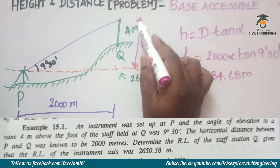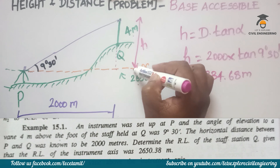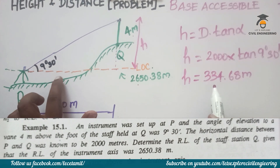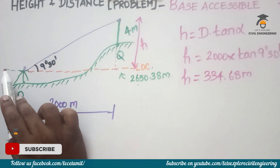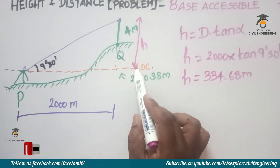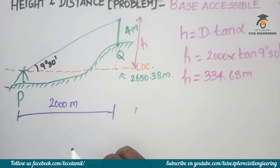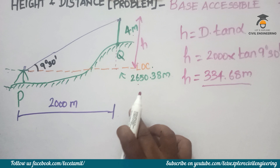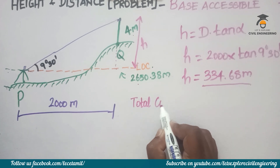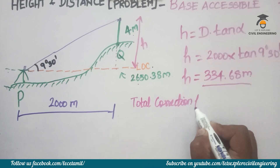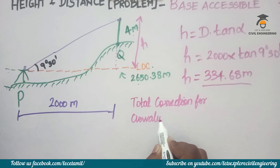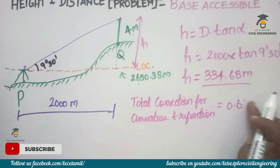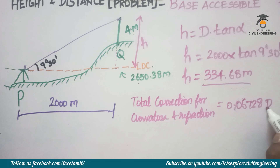Now we need to apply corrections. This is a direct line of collimation height. We have the instrument axis reduce level, and we add it to the staff reading. Since the distance is large, a curvature correction is required. The height calculated is 334.68 meters and curvature correction must be applied.